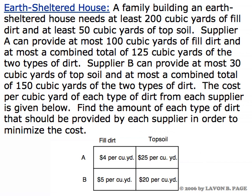The earth-sheltered house example appears in one of your WebAssign questions. A family is building an earth-sheltered house. It requires at least two hundred cubic yards of fill dirt and at least fifty cubic yards of topsoil. There are two different suppliers. Supplier A can provide certain amount of fill dirt and certain amount of combined dirt of the two types. Supplier B can provide at most thirty cubic yards of topsoil and at most a combined total of a hundred and fifty cubic yards of the two types. And we have a cost matrix set up down here that shows the cost of each of the two products from each of the two suppliers.